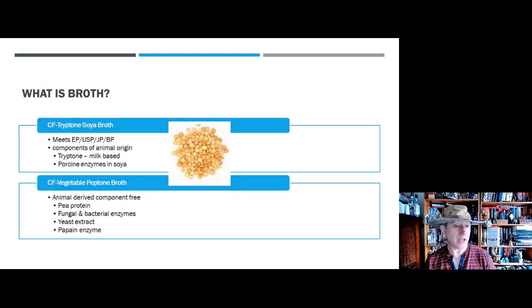The broth that's used is vegetable peptone broth, which is different to the tryptone soya broth that would be used in a sterility test. That's because tryptone soya has an animal origin from cows, and we want to minimize the risk of any prions being present which might lead to product contamination. So we use vegetable peptone broth, which is derived from a pea protein and it goes through an enzymatic process using either fungi or bacteria, and it's derived from Canadian pea plants.